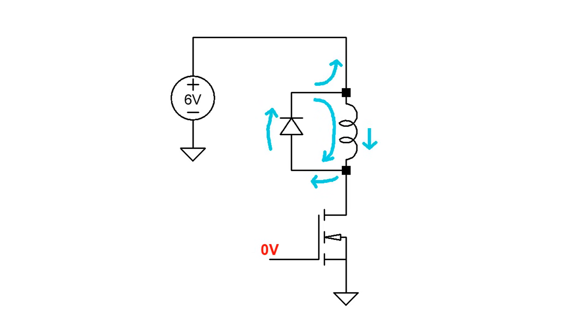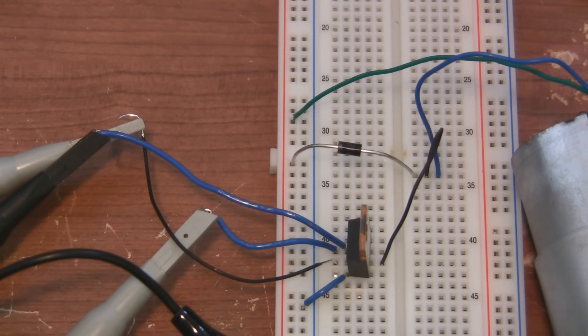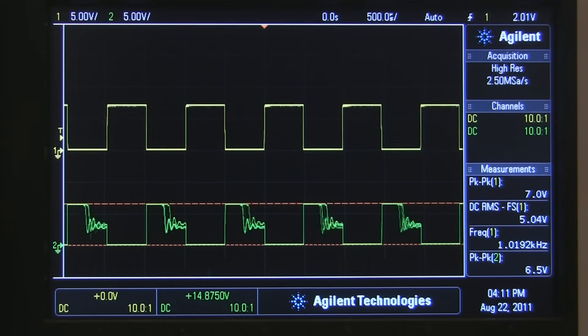Now when the transistor switches off, there's actually a good path for current to flow. The inductive energy will get dumped out of the motor, through the diode, and get returned to the power source. And it will also recirculate back into the motor until it dissipates. It's a simple addition to the circuit, and look at the difference it makes. The inductive spike is completely gone.